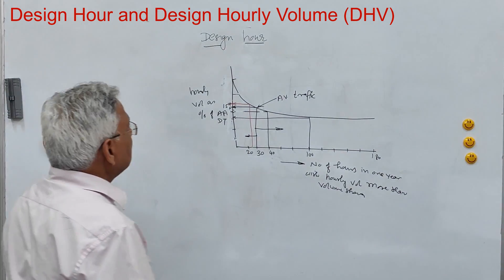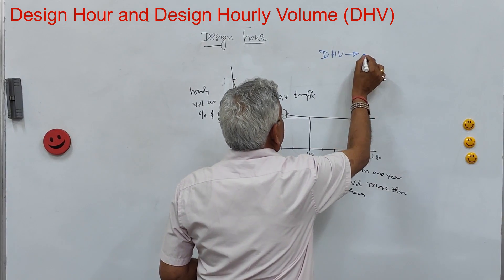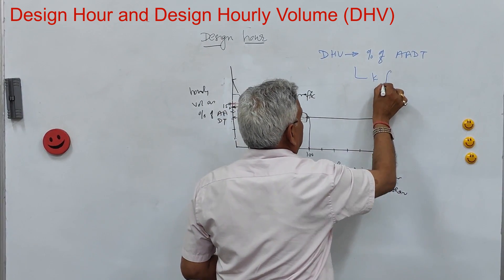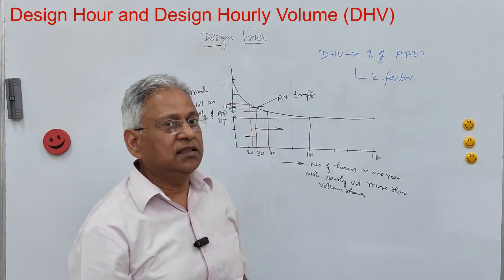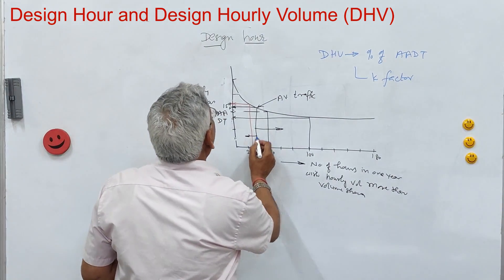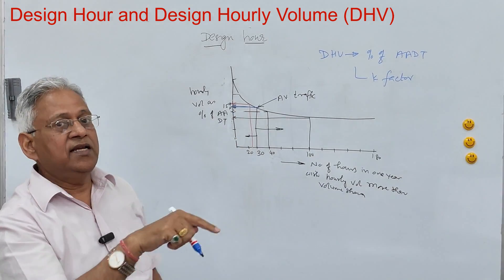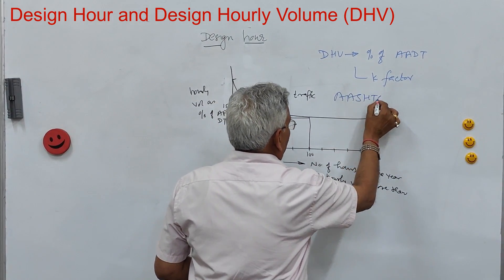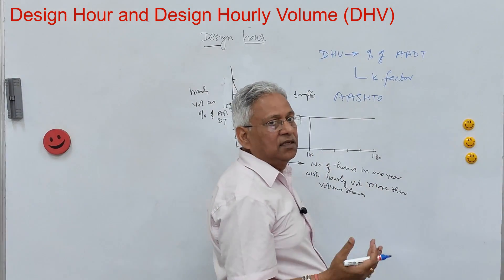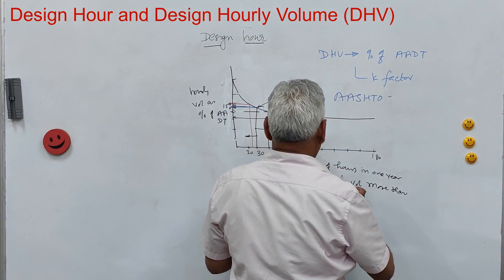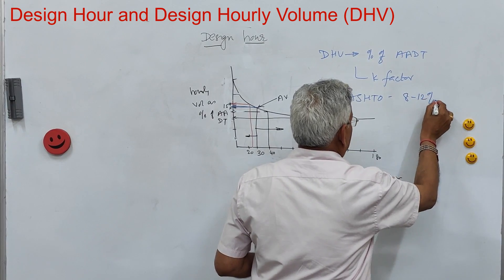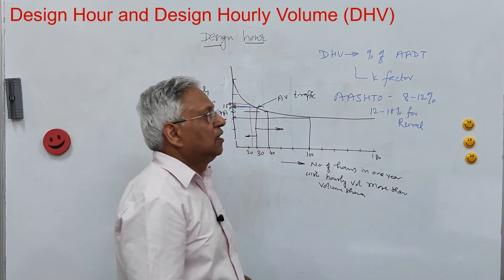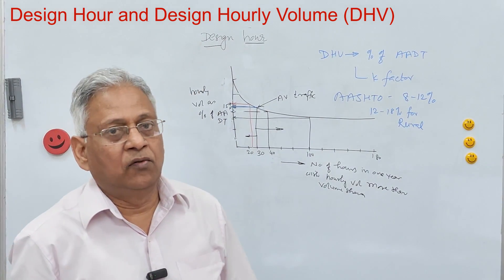Design Hourly Volume (DHV) is taken as a percentage of AADT, and that is called the K factor — it is K percent of AADT for the 30th hourly volume. According to AASHTO, the K factor is around 8 to 12% for urban areas and 12 to 18% for rural highways. IRC 64 suggests a value of 8 to 10% for rural highways, and peak hour flow is taken as the design hourly volume for urban highways.